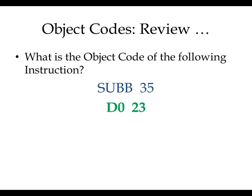Some instructions will produce one-byte object code, some two bytes like this one, and some three bytes. When entering your answer in Pause, we put a space between the bytes — so D0 is the first byte and 23 is the next byte, separated by a blank space. You can do the same when entering your answer in Pause.